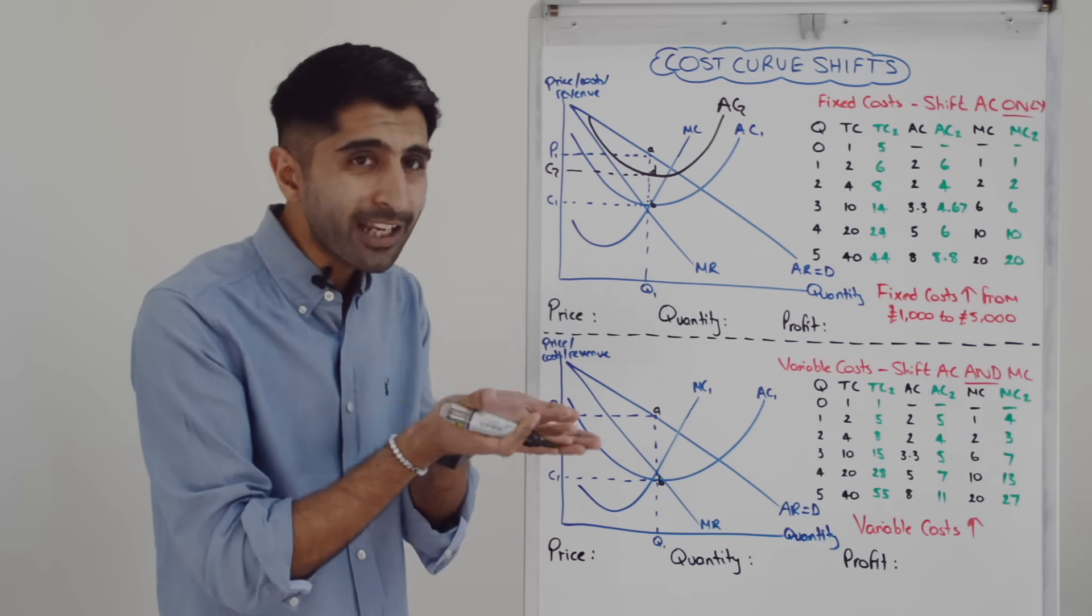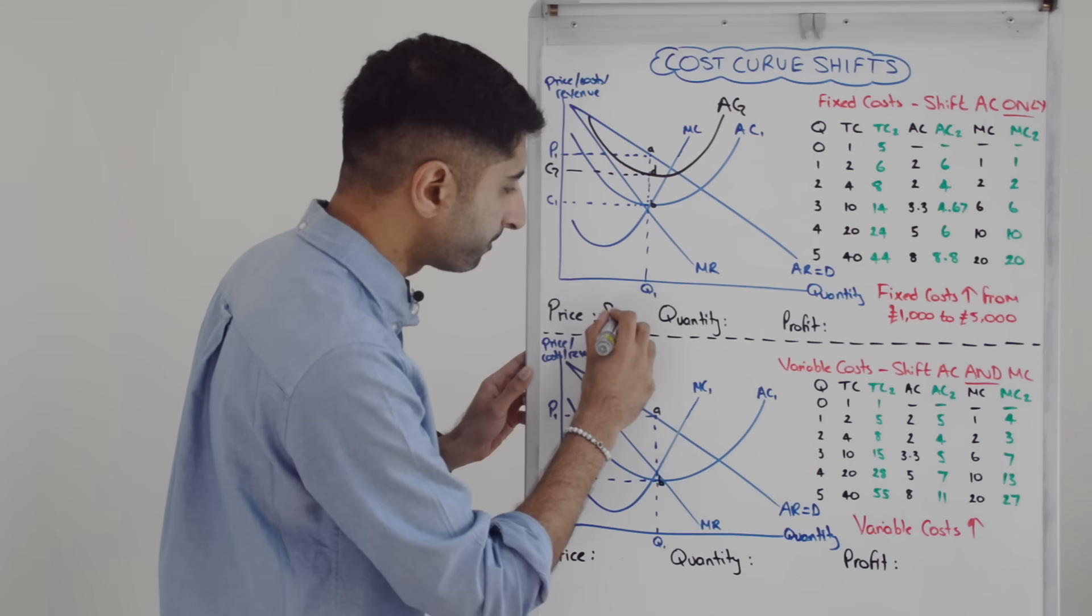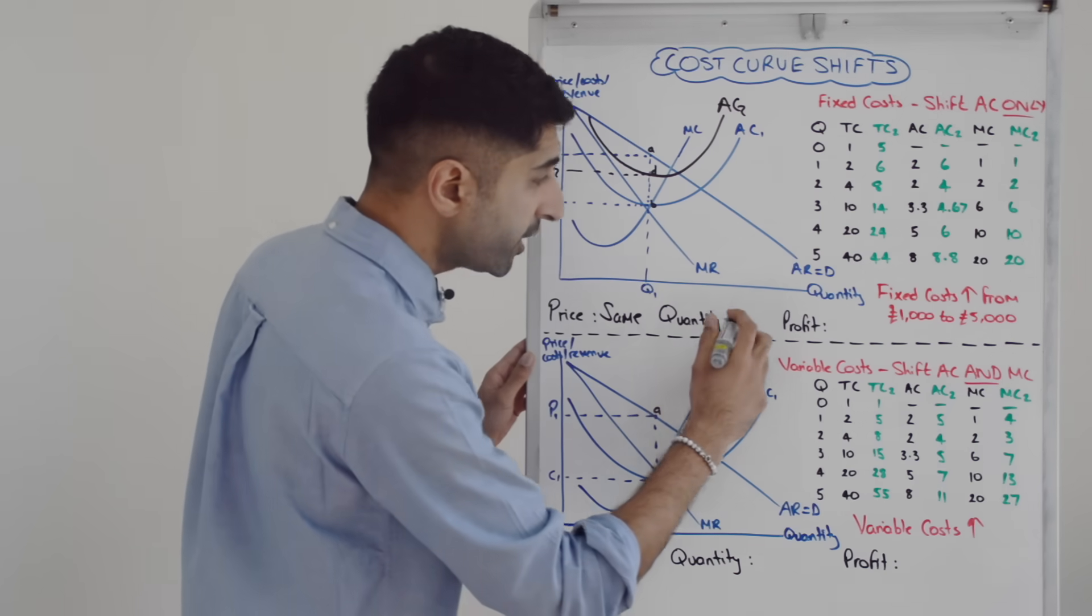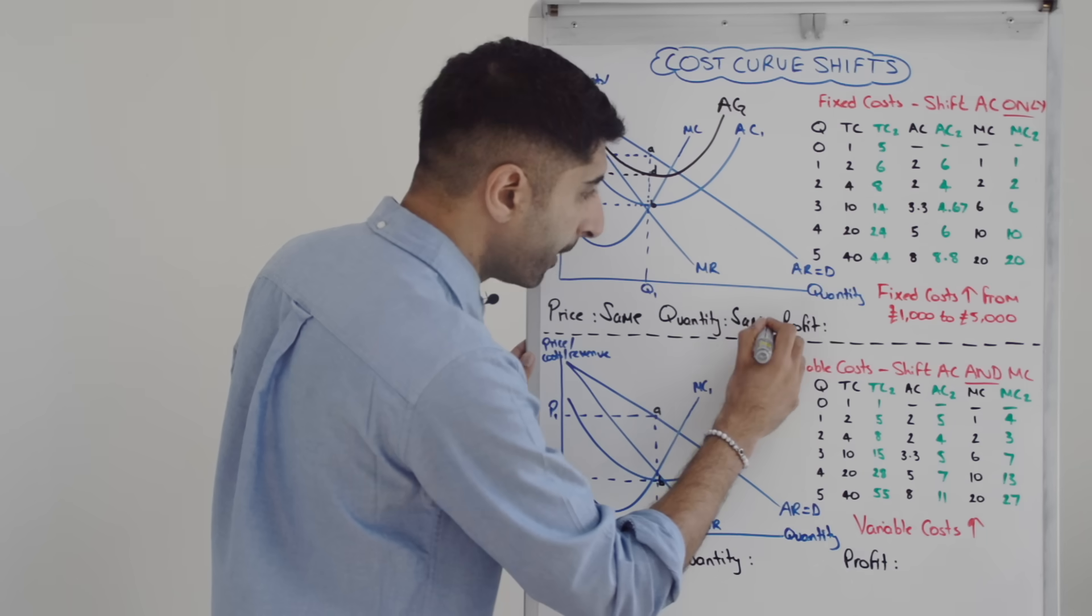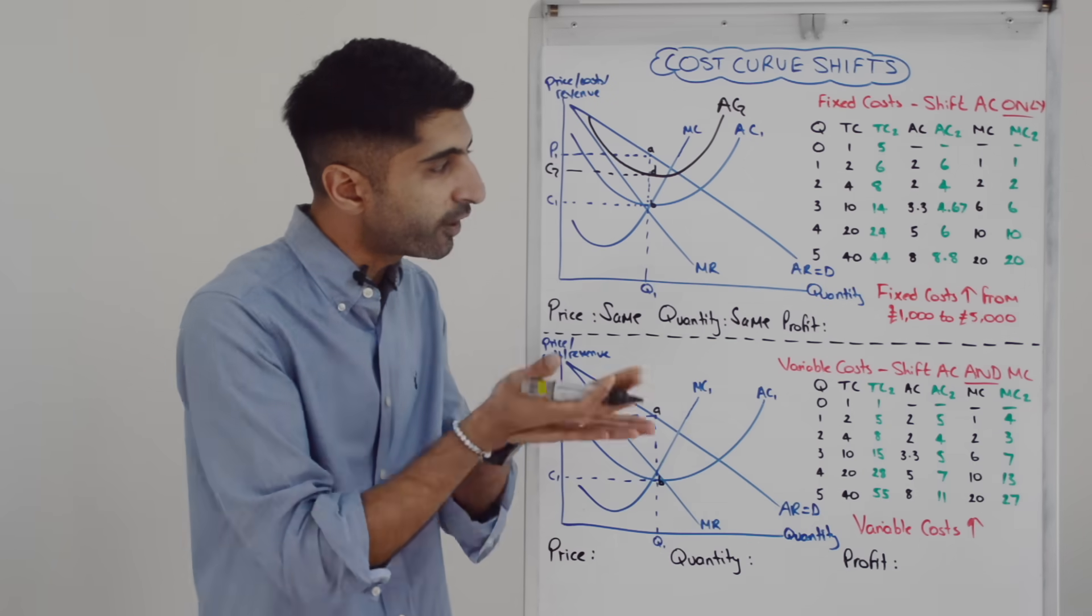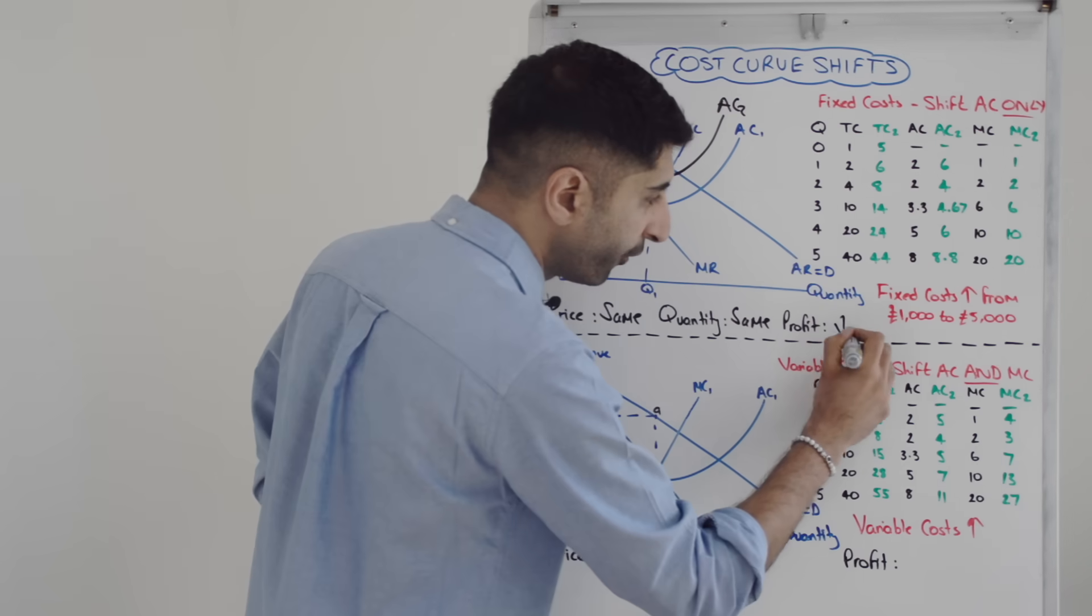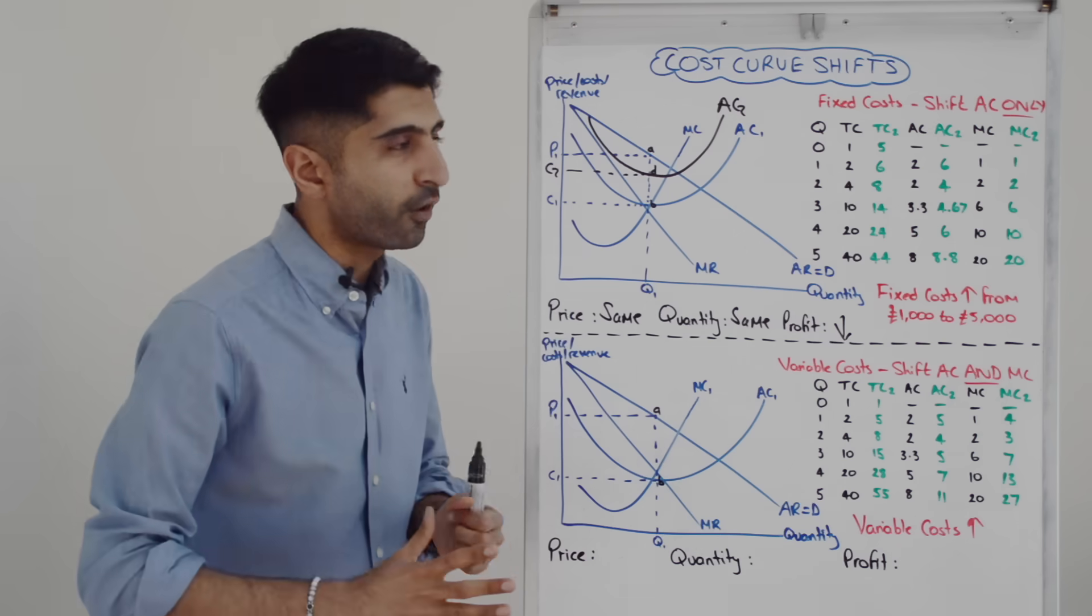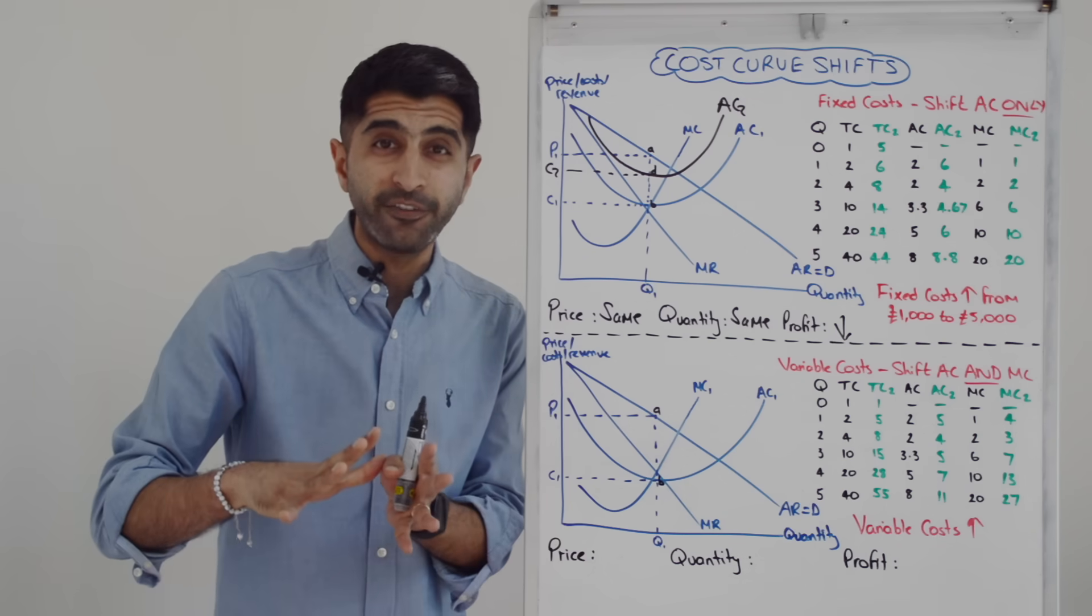So in this case, an increase in fixed costs. Well, price stays the same. Whether fixed costs rise or fall, price will not change. Quantity remains the same, but profit changes. In this case, with a rise in fixed costs, profit falls. If fixed costs go down, profit will increase. That's the only change you will see on this diagram.